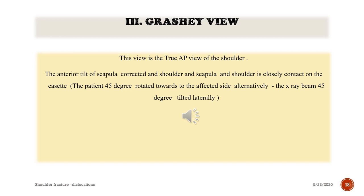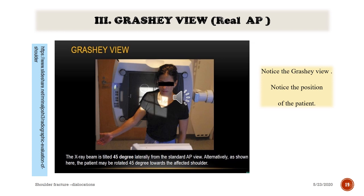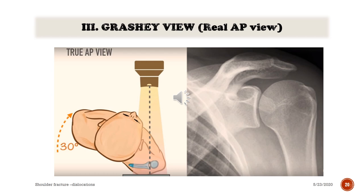The Grashey view is the true AP view of the shoulder. The anterior tilt of the scapula is corrected and the shoulder is closely contacted to the cassette. The patient is 45 degrees rotated towards the affected side, and the X-ray beam is 45 degrees tilted laterally. On the real AP view, the patient is turned 30 degrees, neutralizing scapular rotation, and there is no overlap sign.